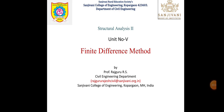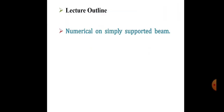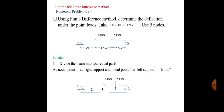Welcome to Structural Analysis 2 video series, Unit No. 5, Finite Difference Method. The lecture outline covers a numerical on a simply supported beam. The numerical statement is as follows: using the finite difference method, determine the deflection under the point load. Take flexural rigidity EI equal to 2.4 × 10⁵ kNm². Use 5 nodes.